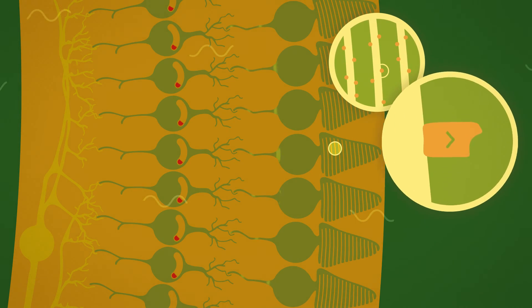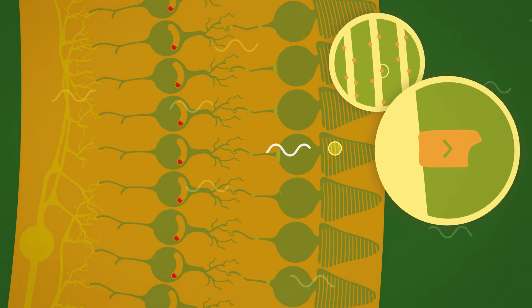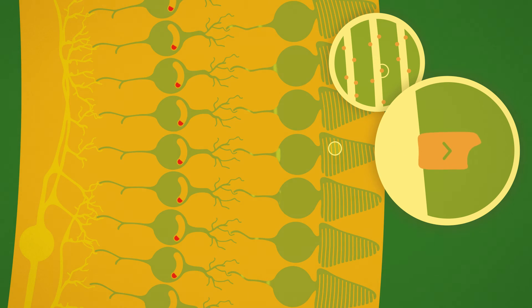When we turn on the light, proteins in the cones sensitive to light called photopsin absorb some of the photons. This triggers a massive biochemical cascade within the cell that slows neurotransmitter release.